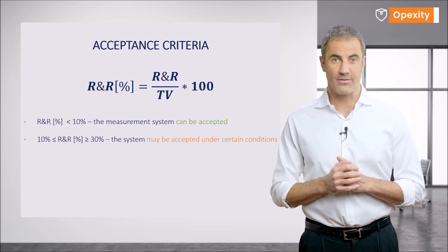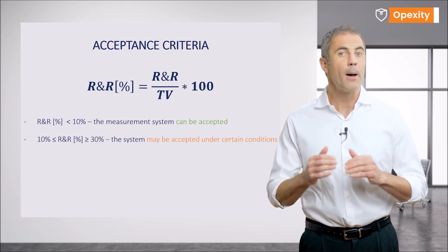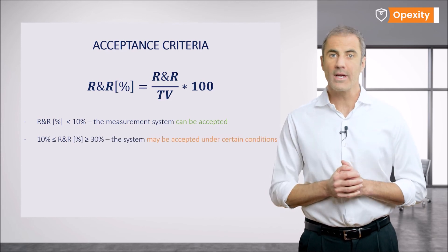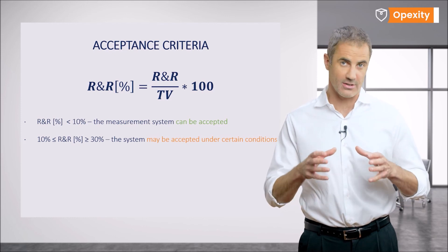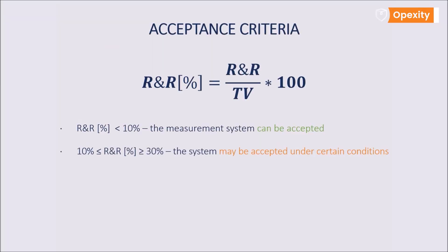If the R&R percentage value is greater than 30%, we can accept such a system under certain conditions. Here the decision must be taken by the study leader, for instance a metrologist. If the R&R percentage value is greater than 30%, then the system may not be accepted. The cause of the inaccuracies should be found and removed or the measurement method should be changed.